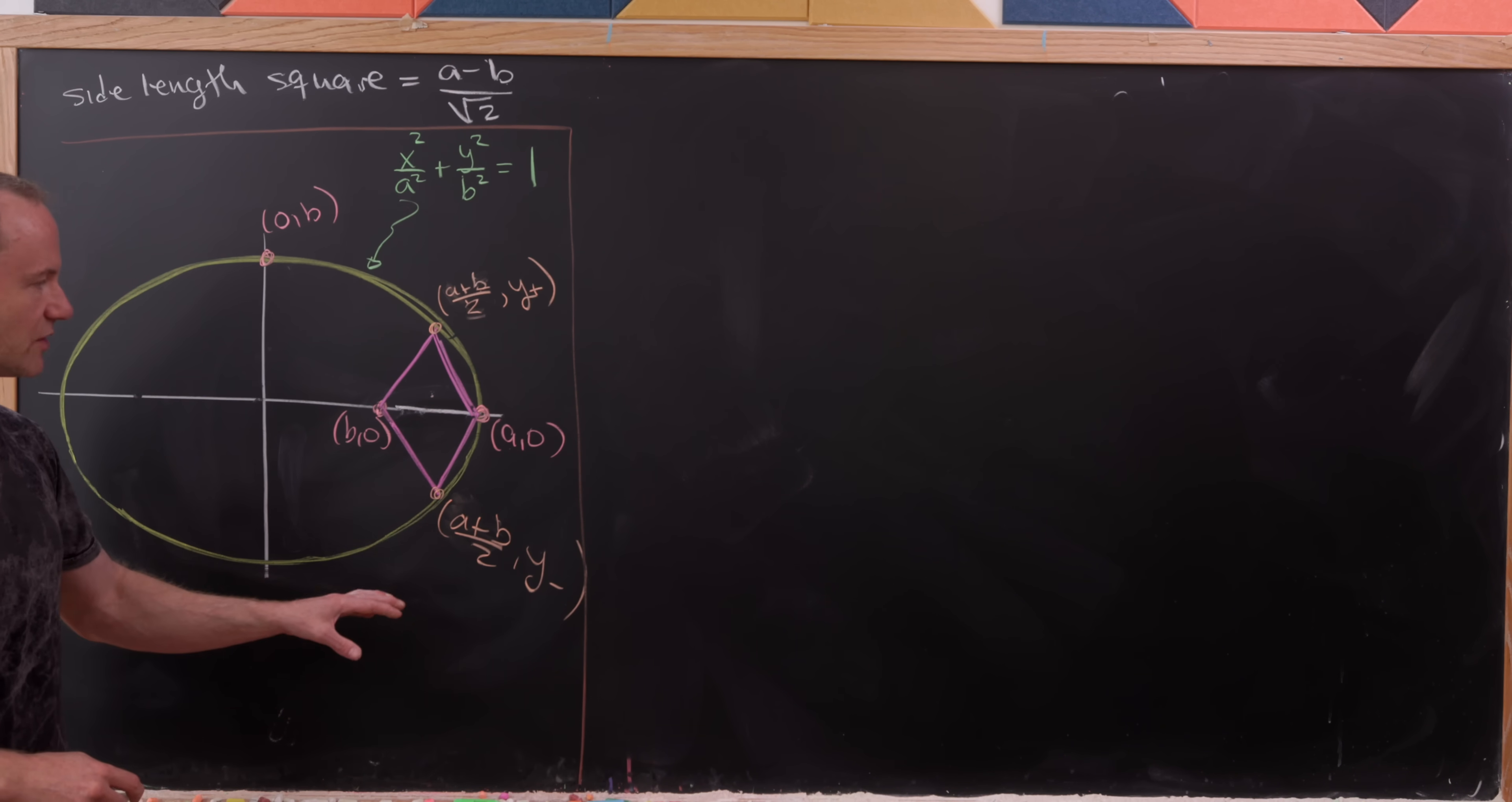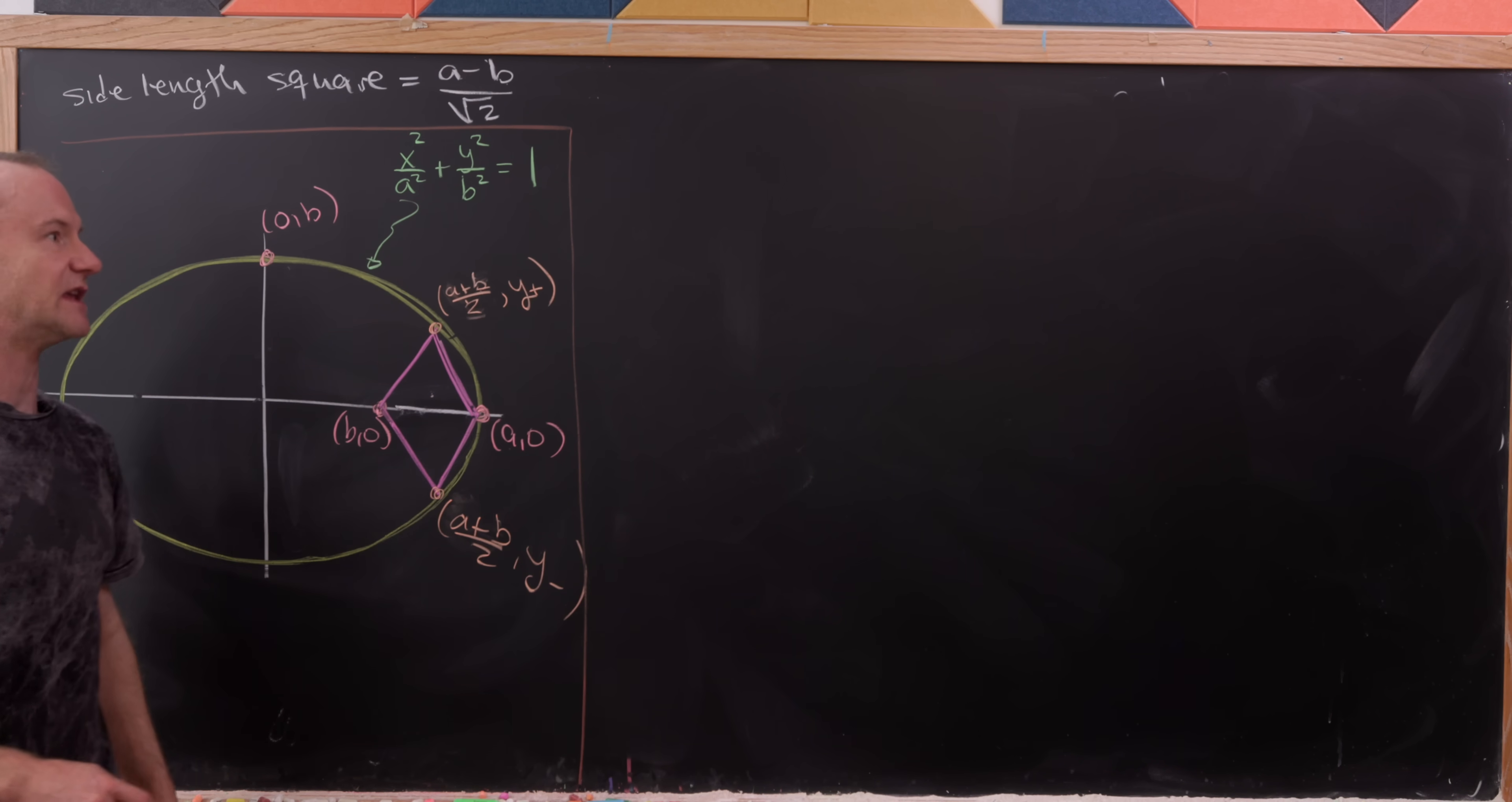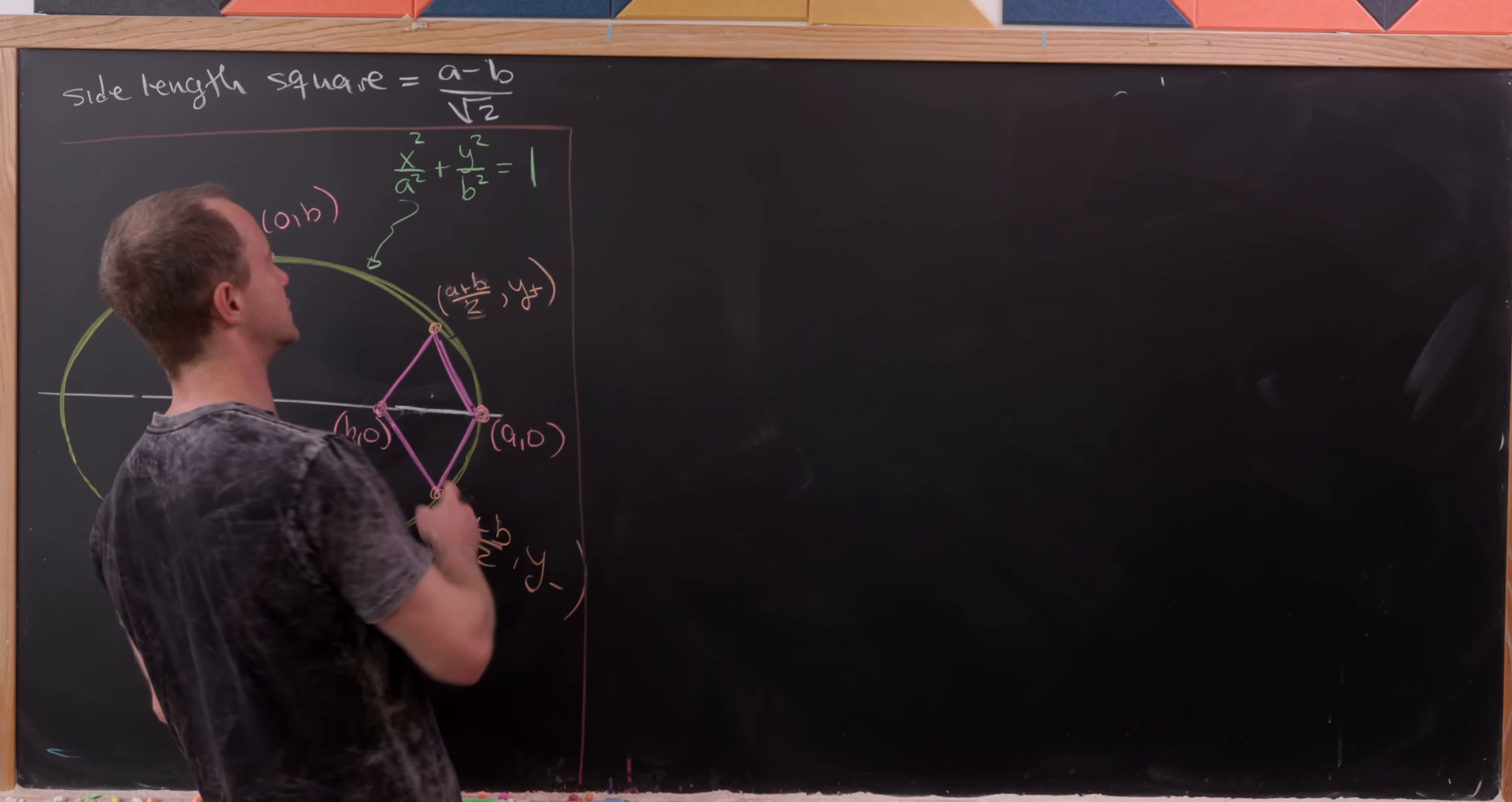But let's notice that these two coordinates have to satisfy the equation defining this ellipse. And so that should give us some sort of way to solve for y+ and y−. Let's get to it.